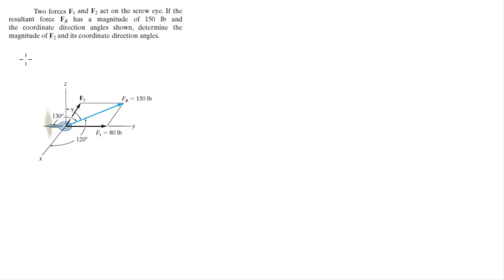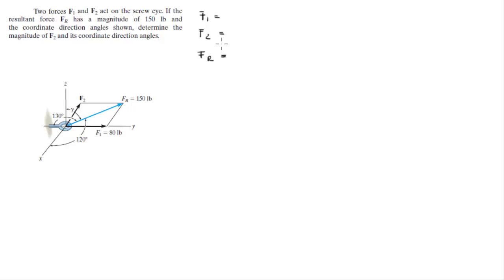Alright guys, now we're going to do these two problems that says two forces F1 and F2 act on the screw eye. If the resultant force FR has a magnitude of 150 pounds and the coordinate direction angle shown, determine the magnitude of F2 and its coordinate direction angle. So we have F1, F2, and FR, and this is what we're trying to find.